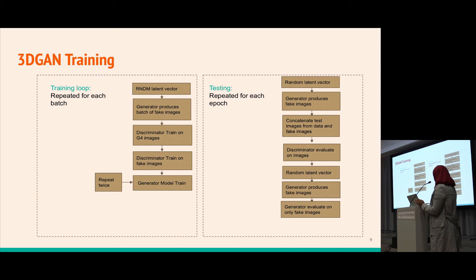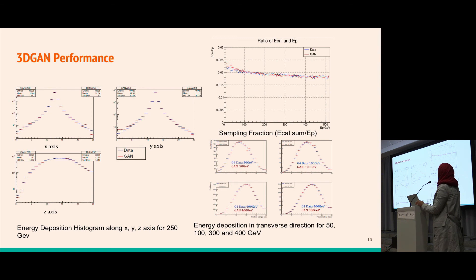These are some figures from our 3DGAN performance. The histograms show how we analyze performance in high energy physics. On the right you see log scale energy deposition along the x-axis, y-axis and z-axis. The results for generated images show similar behavior to Geant4 images simulated using the full Monte Carlo process.